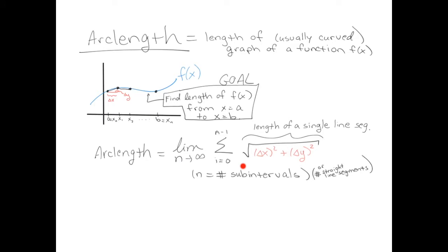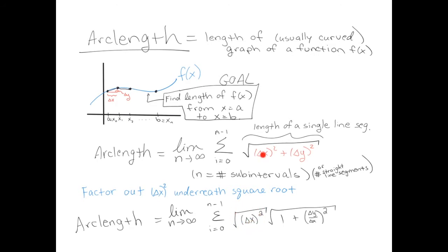In order for one of these summations to actually be an integral, we need a delta x on the end. But according to our formula there is no extra delta x on the outside. So here's what we're going to do: we're going to factor out change in x squared underneath the square root sign. After the change in x squared gets factored out, we're left with a 1 for the first term and change in y over change in x, all squared, for the second term. The square root and the square cancel, giving our desired result. As the limit as n goes to infinity, the summation sign turns into an integral sign, the change in x turns into dx, and whatever is left over goes inside the integral.